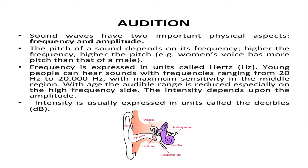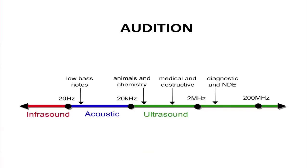Intensity depends upon the amplitude, and is usually expressed in units called decibels (dB). Sounds above 120 decibels are likely to be painful to the human ear. If sound is produced by a great number of unrelated sound waves, it is perceived as noise which we cannot analyze.